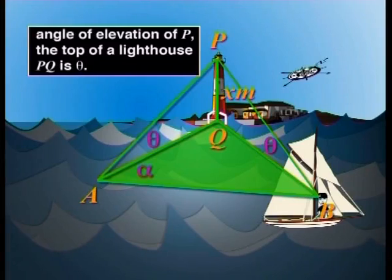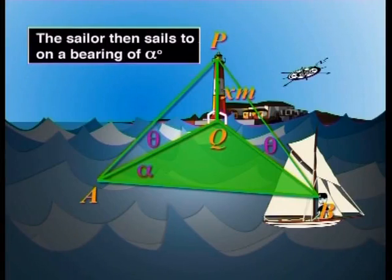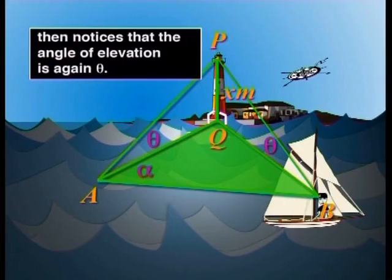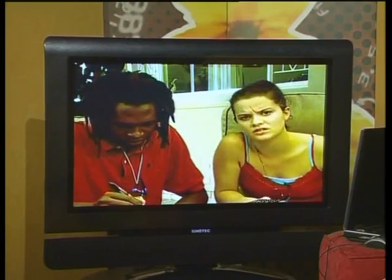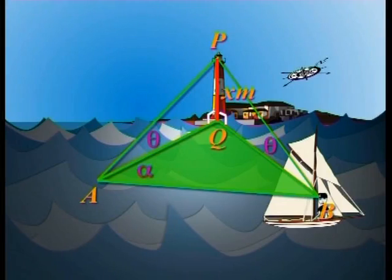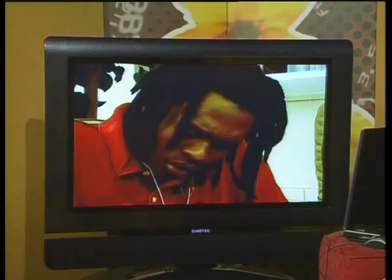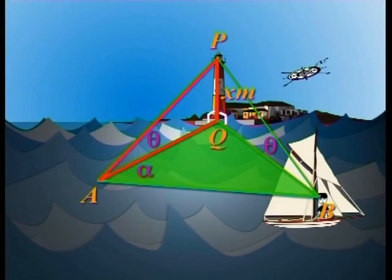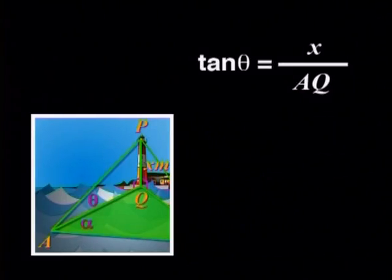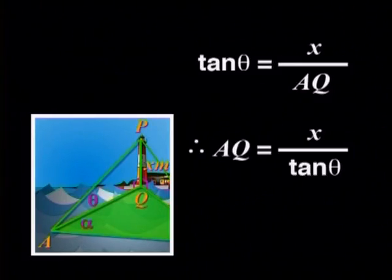What information have we not yet used? The angle of elevation from A and the bearing angle alpha have been filled in. What we haven't used yet is that from B, the angle of elevation of P is again theta. You can fill in another theta. Perhaps you can express AQ in terms of X and a ratio of theta. AQ lies in the right-angle triangle PAQ, so X divided by AQ equals tan theta, and therefore AQ equals X divided by tan theta.